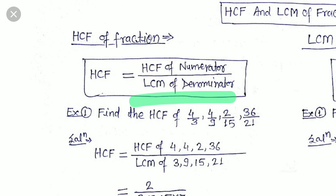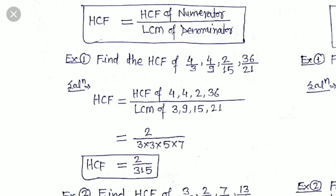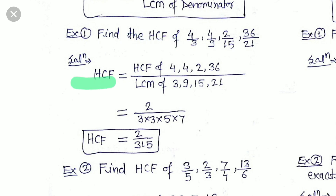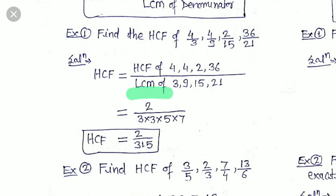Let's see what it means and how it is calculated in the examples. In the first example, the fractions are 4/3, 4/9, 2/15, and 36/21. We have to calculate the highest common factor of these fractions. HCF of these fractions is HCF of the numerators — that is 4, 4, 2, and 36 — divided by the LCM of the denominators, that is 3, 9, 15, and 21.